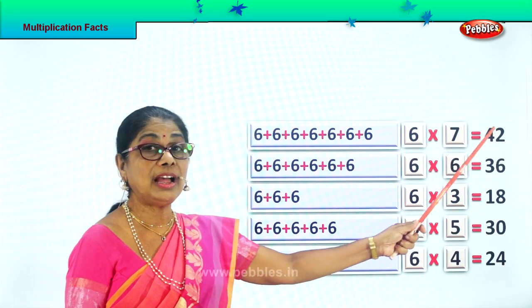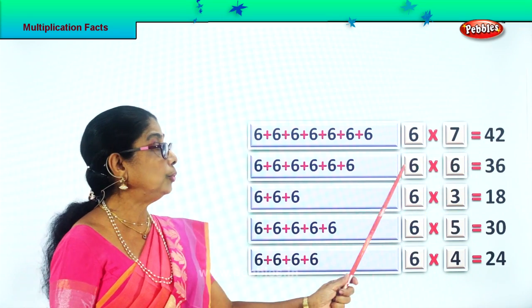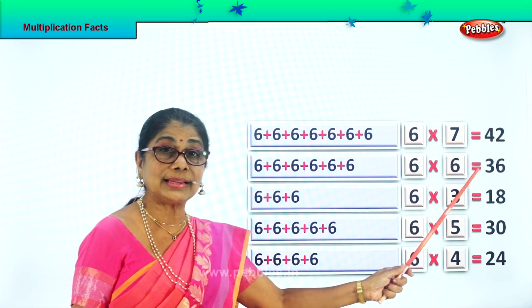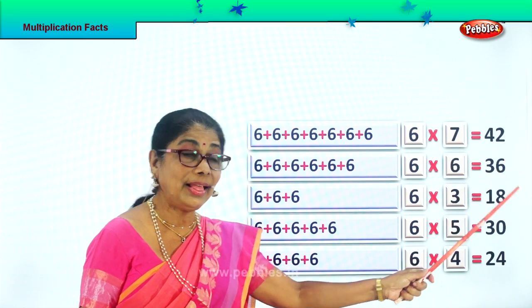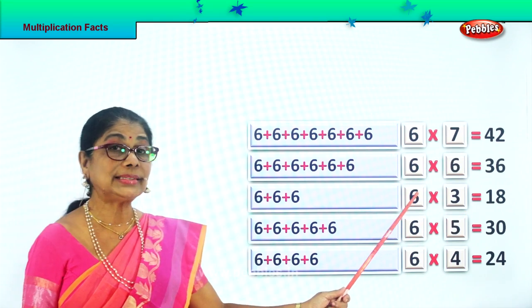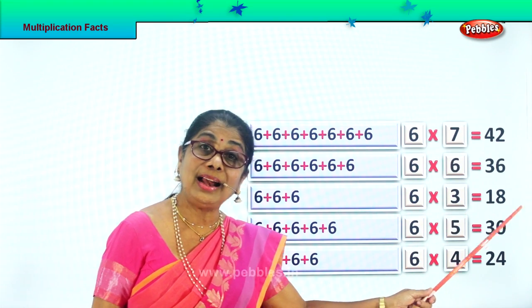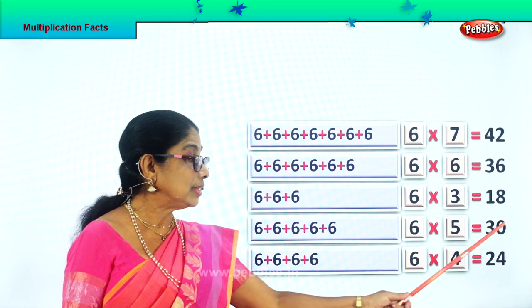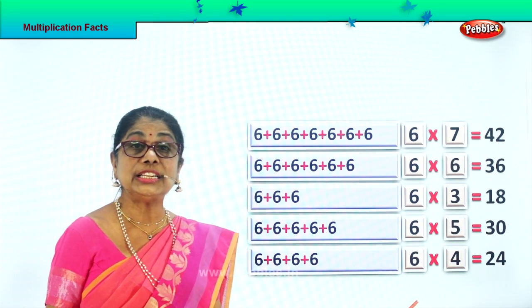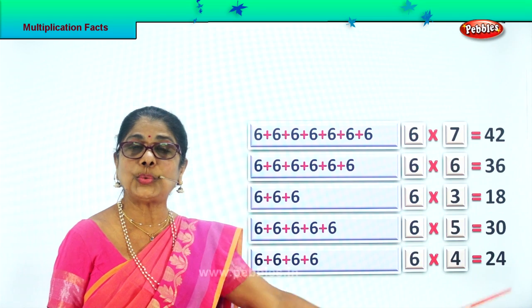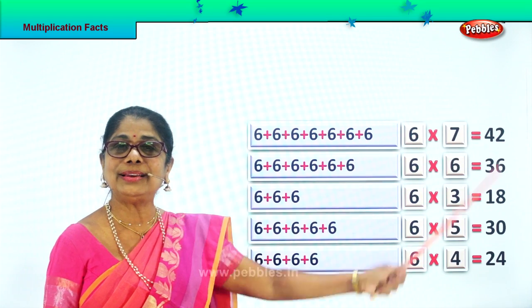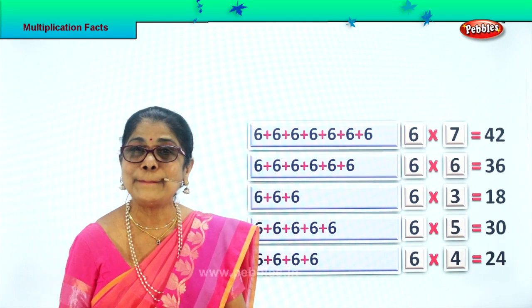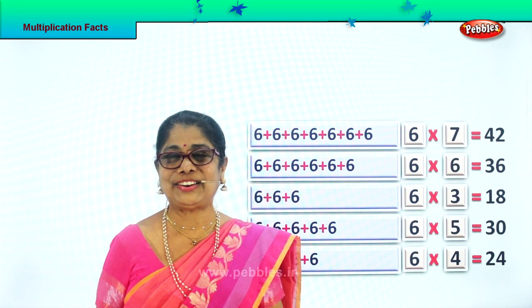Read it. 6 sevens are 42. 6 sixes are 36. 6 threes are 18. 6 fives are 30. 6 fours are 24. Here are our multiplication facts.